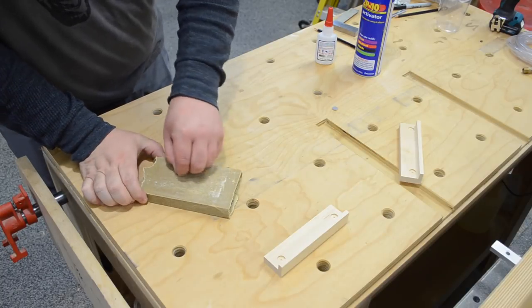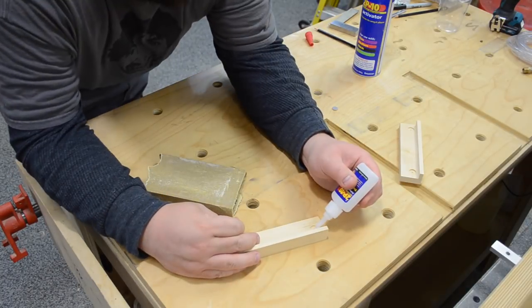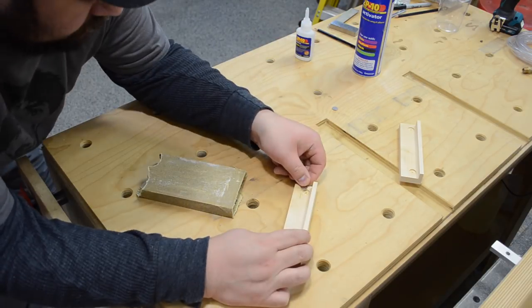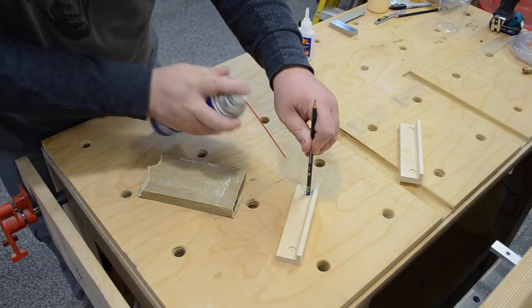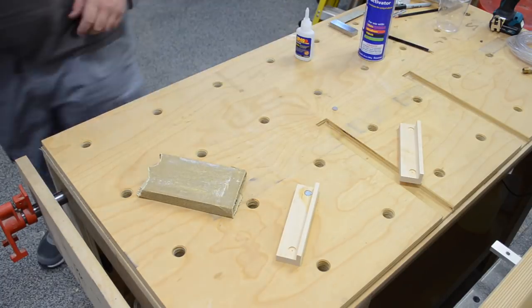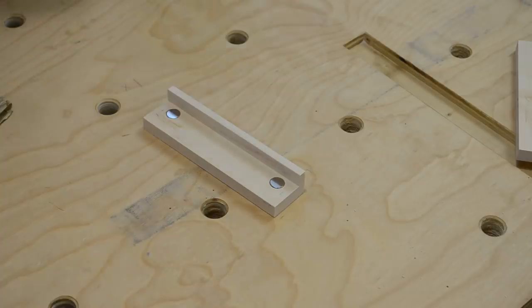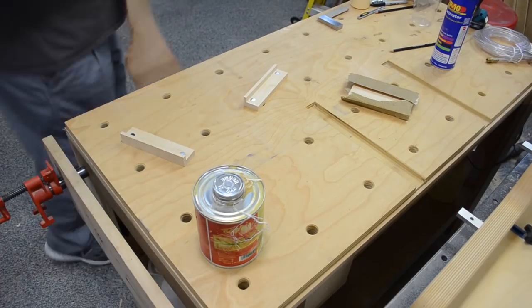Then I could use some sandpaper and just kind of scuff up one side of the magnet, give it a little bit of a mechanical tooth. That way when I use some CA glue to secure them into place, it was a little bit better of a bond, a little bit better of a hold. Then I use a pencil to hold it down and make sure the magnet was sitting nice and flat inside that hole. Use a little activator and I was good to go.